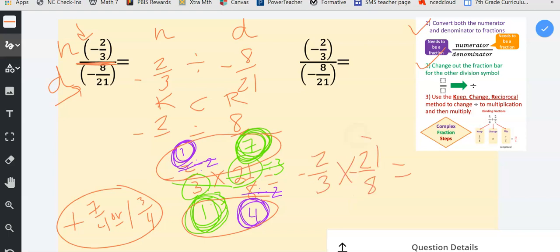Alternatively, you could also decide that you want to multiply first. We would get forty-two in the numerator and twenty-four in the denominator, and then you could reduce as your second step.